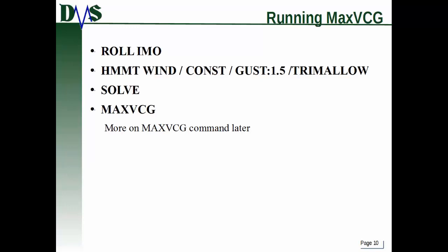The last thing to show is how to do this setup if you're going to run a max VCG analysis. It's a slightly different sequence, but again you have to follow the exact sequence. Type 'roll IMO,' then 'healing moment wind constant' with all your parameters, then solve — and then don't do anything else. Don't apply the roll command or anything else; just run max VCG. If this exact sequence has been set up before running max VCG, GHS knows how to apply the correct roll commands ahead of time. It will recognize you're setting up an IMO wind criteria and will run max VCG with the correct modifications. The max VCG command is covered in the next tutorial.